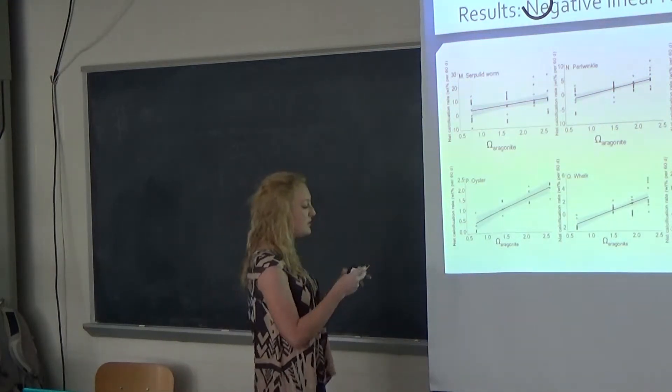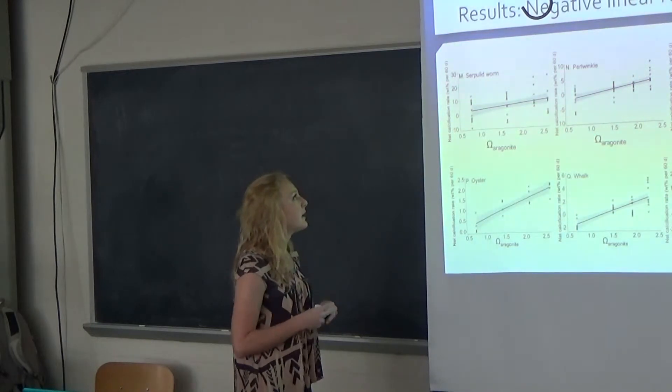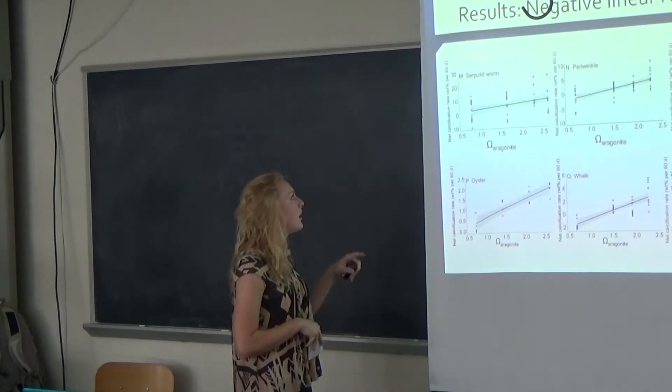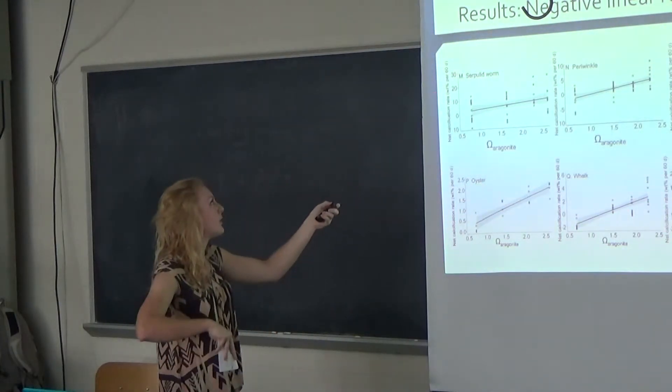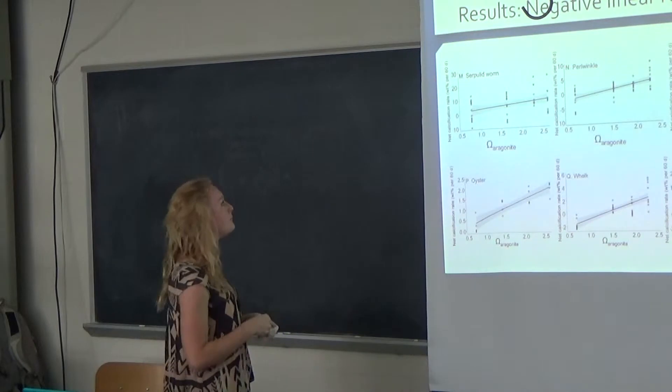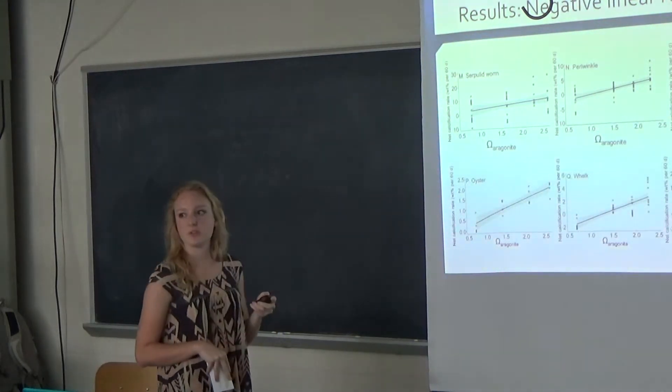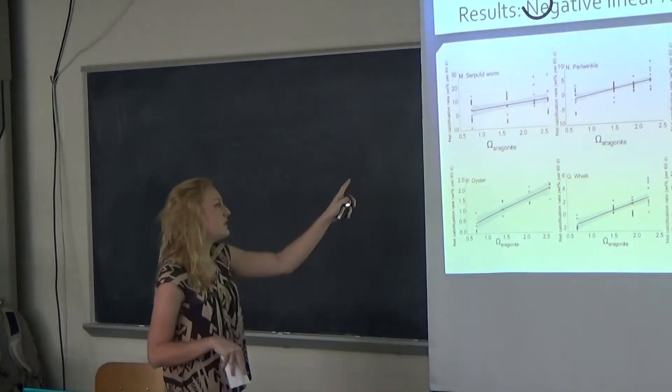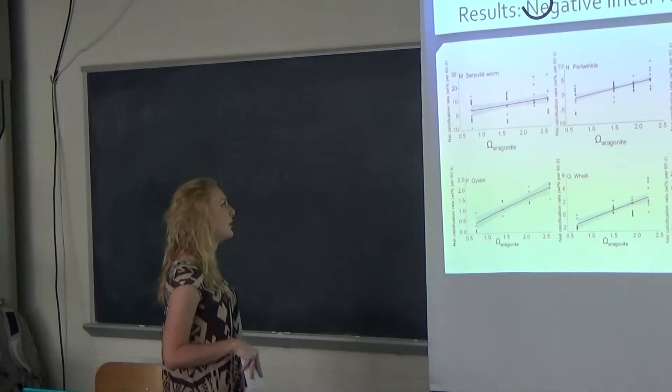Right here you can see that there is a negative linear response because as the CO2 levels are high for the low levels of saturation rate, it decreases whenever the higher saturation level is reached. You can see that it progresses from each of the organisms that are analyzed here.